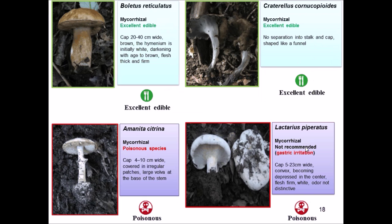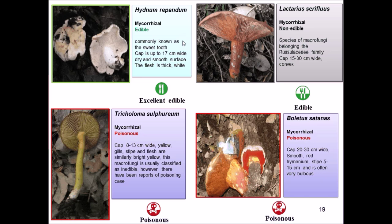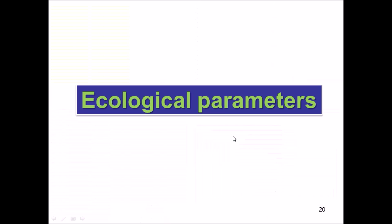Other fungi growing in northwestern Tunisia include edible mycorrhizal species like Boletus reticulatus and Craterellus cornucopioides. There are also some deadly and poisonous species like Amanita citrina and Lactarius piperatus, which can cause gastric irritation. Other edible species include Hydnum repandum, while deadly poisonous species include Tricholoma sulphureum and Boletus satanus — very distinctive because of the red color of the pileus and oxidation when a part of the cap is cut.